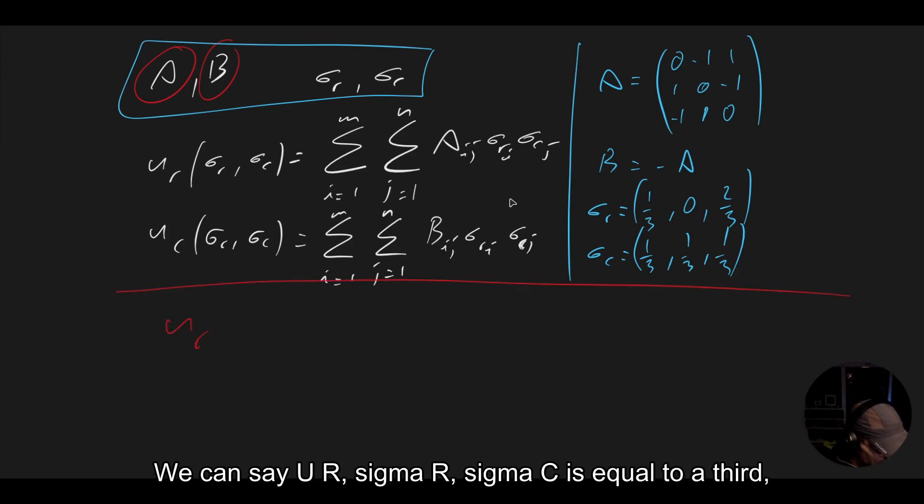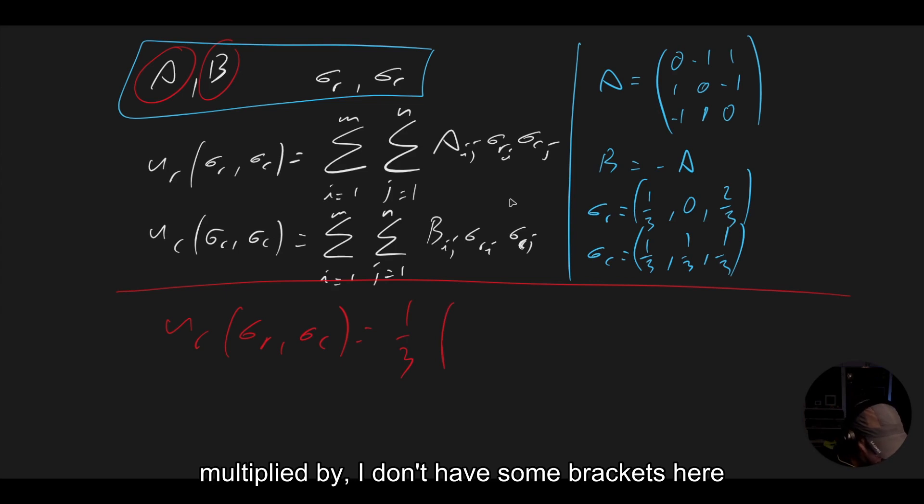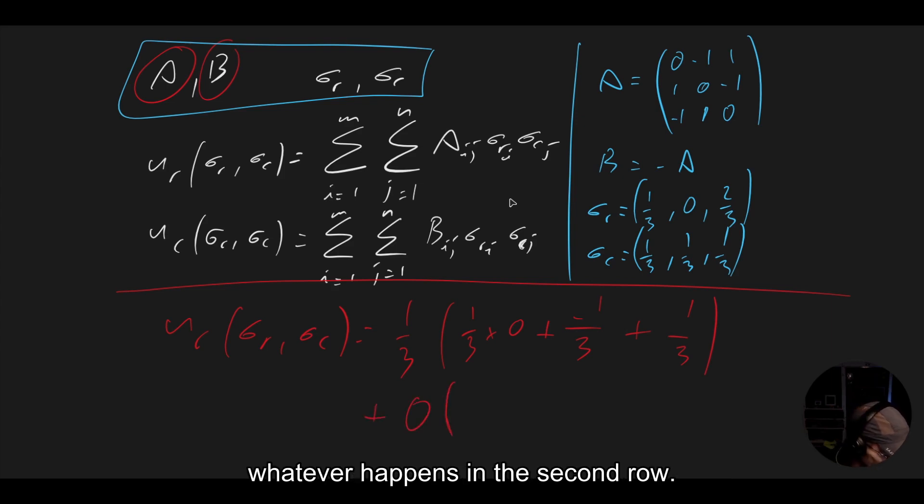And so we can write out what this calculation will be. We can say U_R sigma R sigma C is equal to a third multiplied by, and I'll have some brackets here because this is the third of the time we're in the first row. So the third time in the first row, we get a zero a third of the time, plus minus one a third of the time, plus one a third of the time. And then we're going to have zero times whatever happens in the second row. We can just omit it.